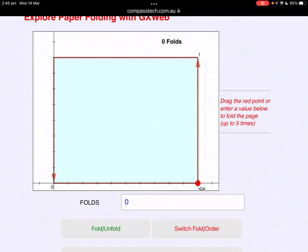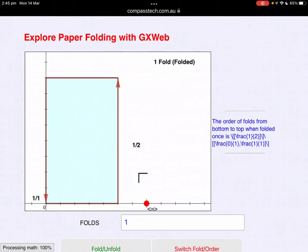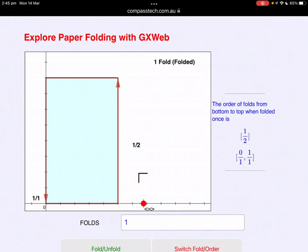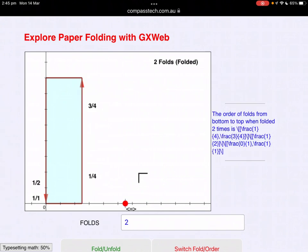Our model begins, as I mentioned, with a piece of paper where we assign 0 to the left-hand side and 1 to the right-hand side. And now we begin to fold. One fold. And we have 0 and 1 at the left and a half at the fold on the right.